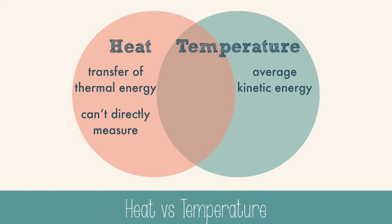We don't have heat-o-meters. It's just too complicated to calculate every possible source of heat energy in an object, kind of like trying to precisely measure the volume of the ocean — it's just not going to happen. But we can measure temperature with thermometers. The main unit of measurement for heat is the joule or calorie.